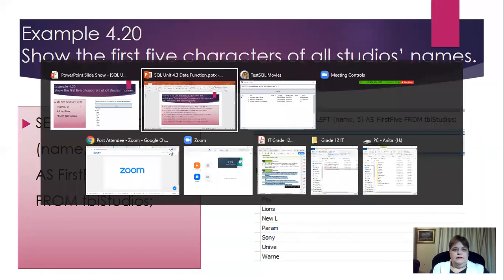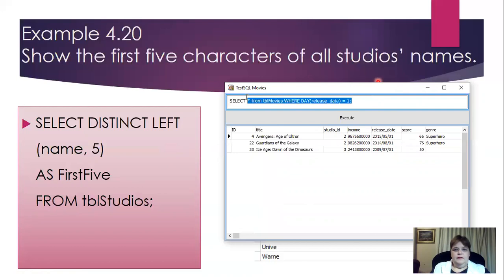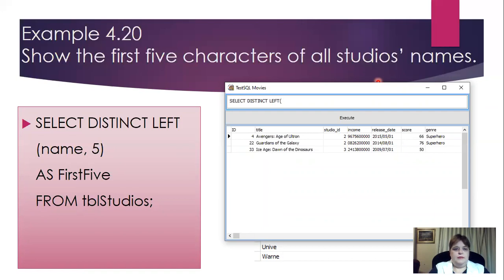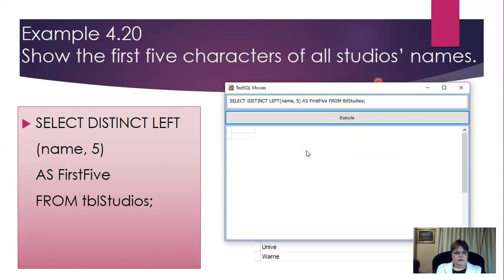We're going to use DISTINCT again. I'll write: SELECT DISTINCT LEFT(name, 5) AS first_five FROM TBL_STUDIOS. Let me just double-check — not 'students', studios! Here we go. What it's done is taken all the different studios but only displays the first five characters. So we can see Disney, DreamWorks, Paramount, Universal, Warner Brothers — but each shows only its first five characters.